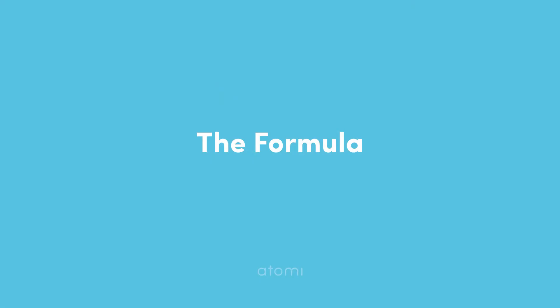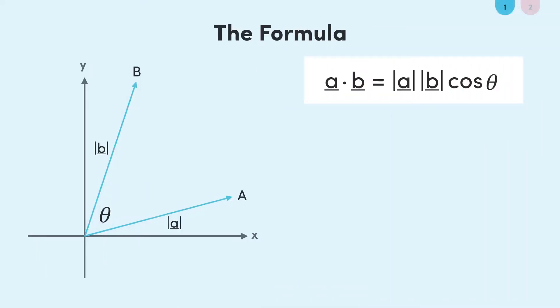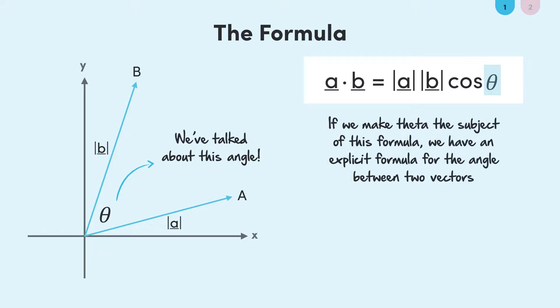I hope you've immediately recognized that we've already been talking about the angle between two vectors in the context of the dot product. In this formula for the dot product, we defined theta as the angle between vectors a and b. If we make theta the subject of this formula, we will have an explicit formula which tells us what the angle between two given vectors is.